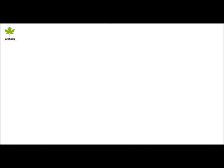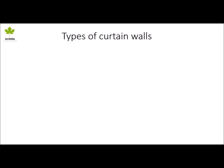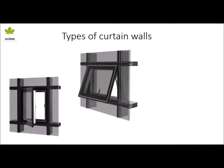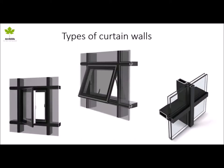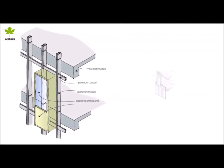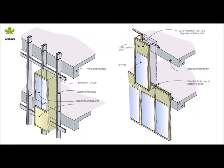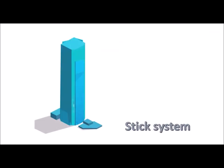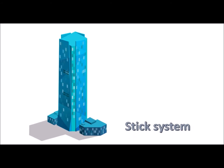Types of curtain walls: curtain walls can be classified by their method of fabrication and installation into the following general categories — stick systems and unitized systems. In the stick system, the curtain wall frame, mullions and transoms, and glass or opaque panels are installed and connected together piece by piece.